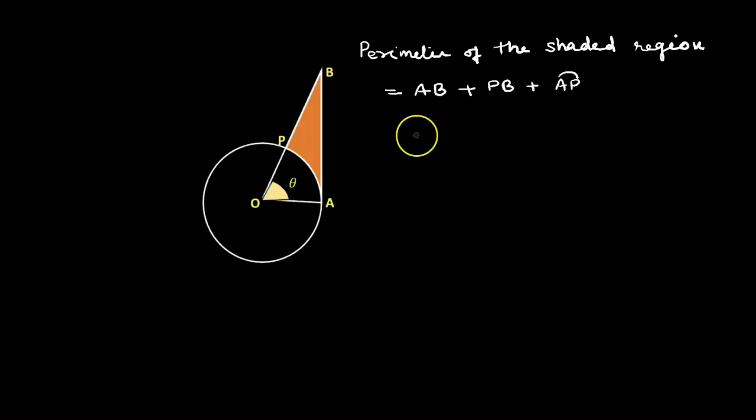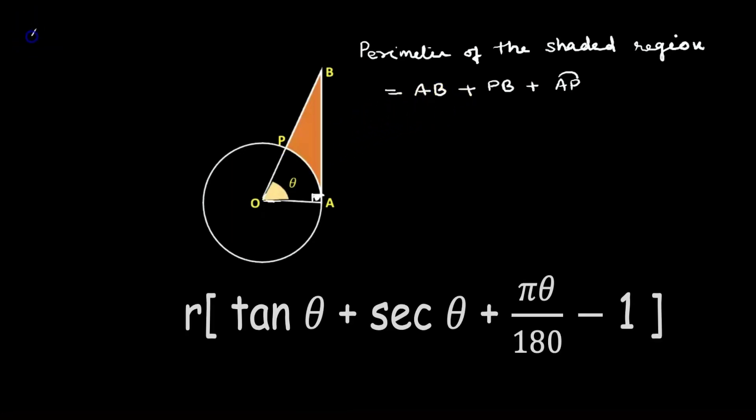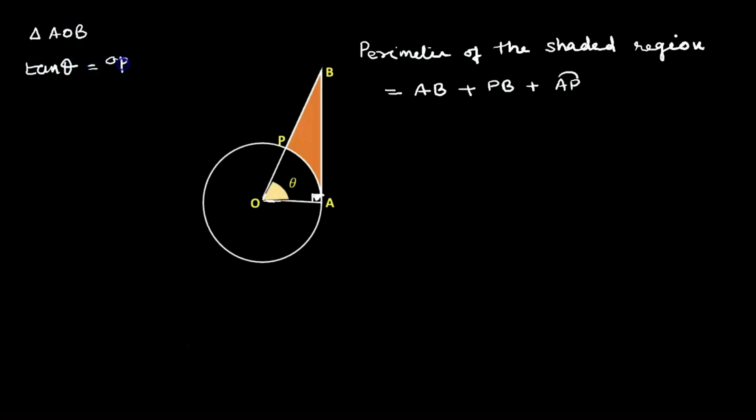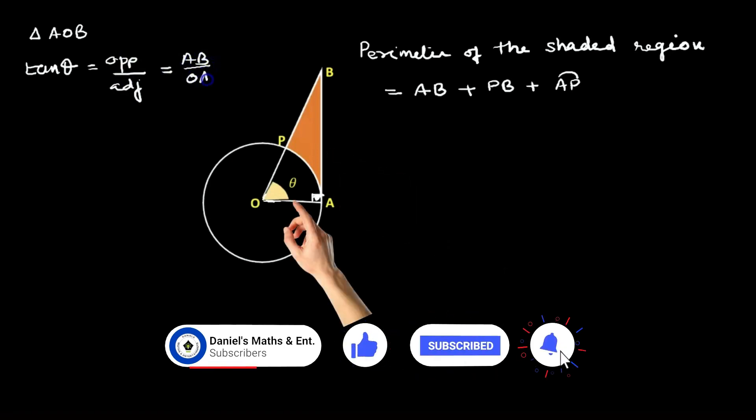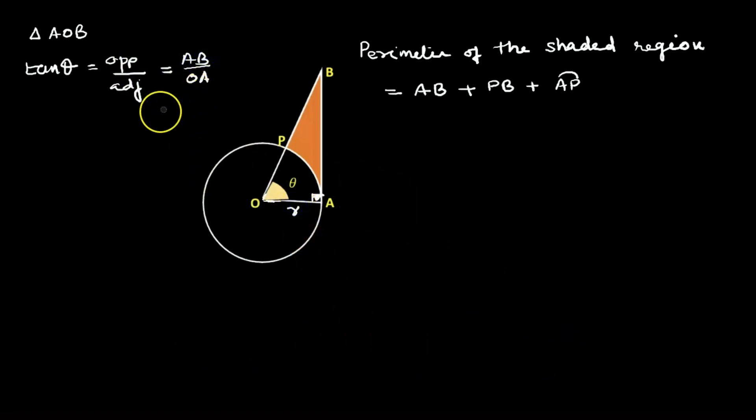AB is perpendicular to the radius OA, so triangle AOB is a right triangle. Our answer is in terms of tan and sec, so we will use tan here. The opposite side of angle θ is AB, adjacent is OA. So tan θ equals AB by OA, which equals AB by r. Therefore AB = r tan θ.